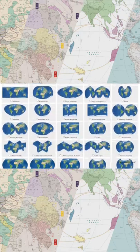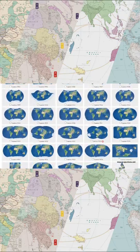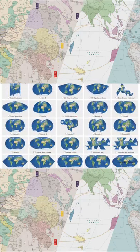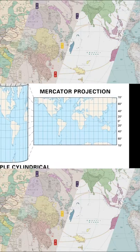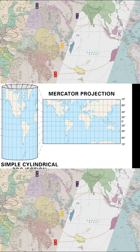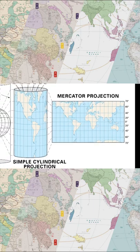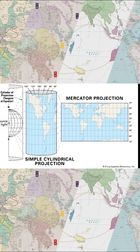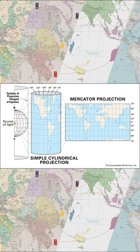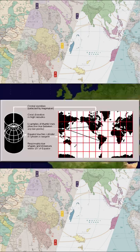By now, most people know that any map of the world is an imperfect representation. A map is a flat 2D object that attempts to take on the projection of a spherical 3D object. This is the catch-22 in cartography.